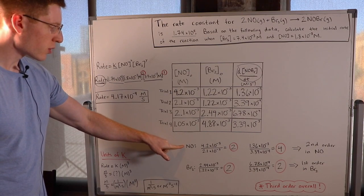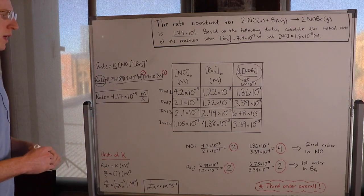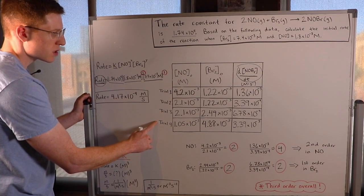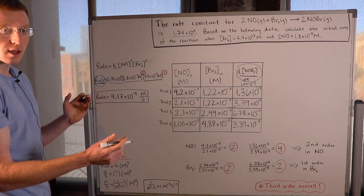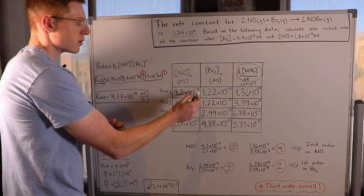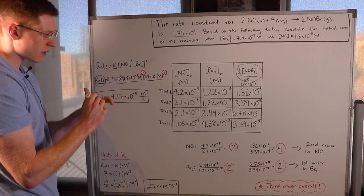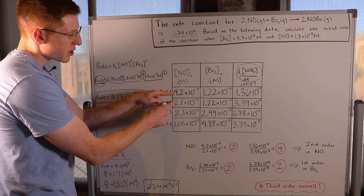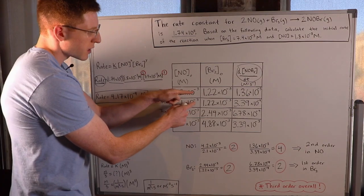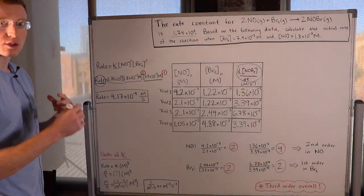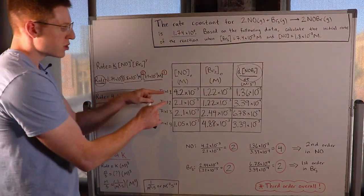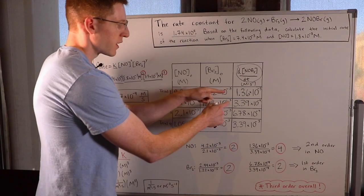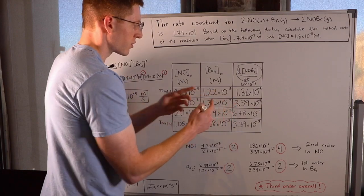To find the order of the reaction with respect to NO, I want to find two trials where the concentration of NO changes but the concentration of Br2 stays the same. Trial 1 and trial 2 are perfect for this — the concentration of NO changed but the concentration of Br2 was held constant. That way I can look at just the effect of changing NO's concentration on the overall rate.